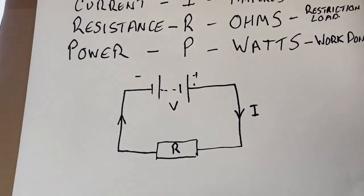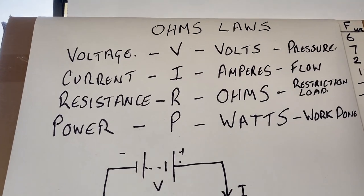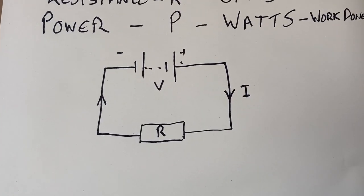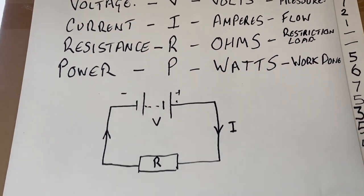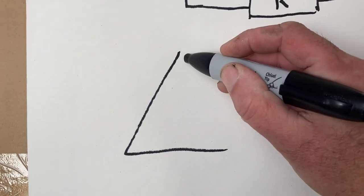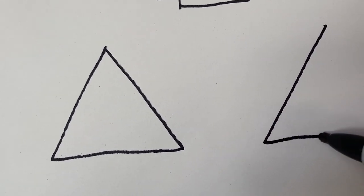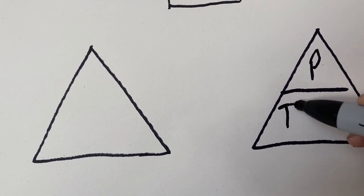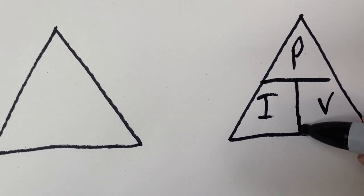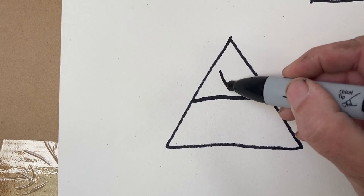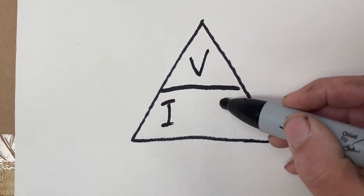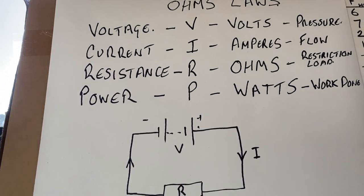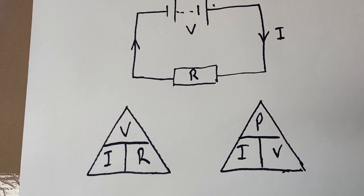These values can be put into triangles that allow us to solve any circuit. There are two key triangles: the power triangle (PIV) and the voltage triangle, sometimes known as the VIR triangle. Those two triangles help us solve any circuit — if we know two things, we can calculate the rest.